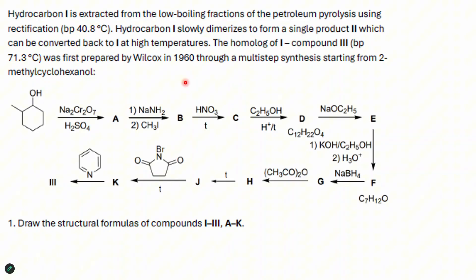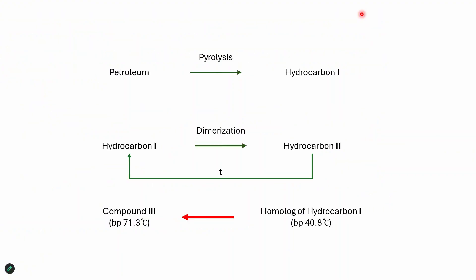First thing first, here you see a lot of sentences, bunch of words. What we are going to do first is to write them in diagram form so that when we need to look up for information, it's easy. So what I'm going to do is I'm going to convert these sentences into a simple diagram. So this is what we are given. We have petroleum from pyrolysis. We get hydrocarbon one and two. Two is the dimer of one. They are interconverting to each other. And homologue of hydrocarbon one is compound three. And this is what we are going to synthesize. I converted this text into diagram form. You have to take a note of these kind of things when you solve the problem so that you can easily refer to whenever you need to.